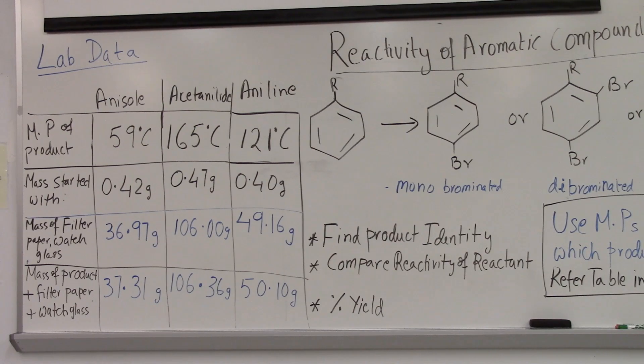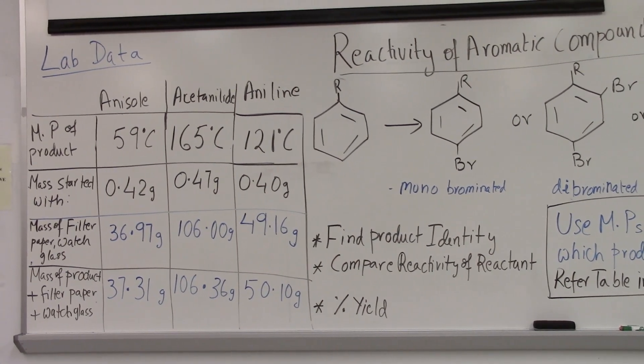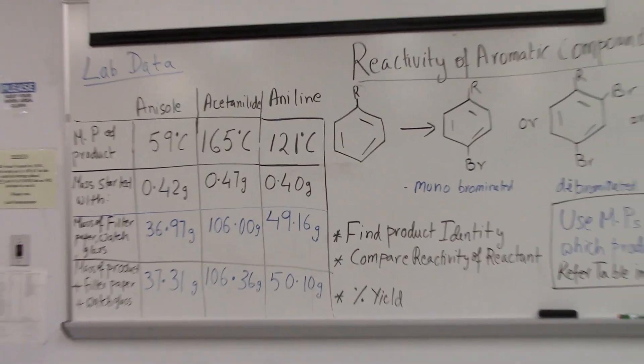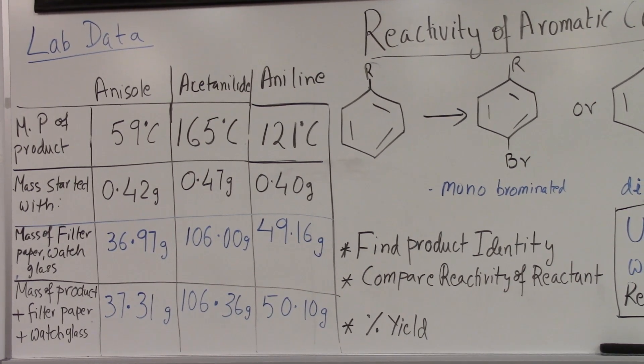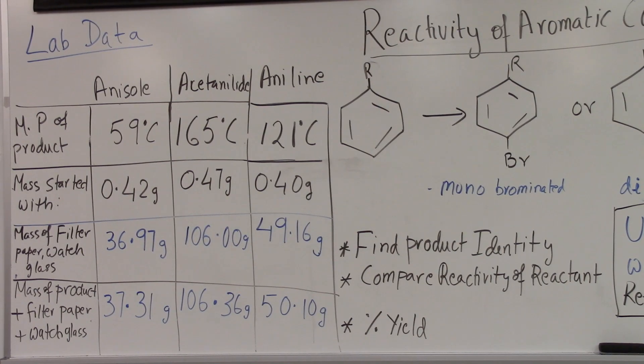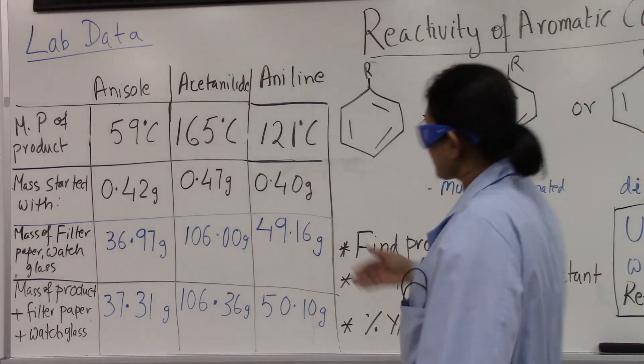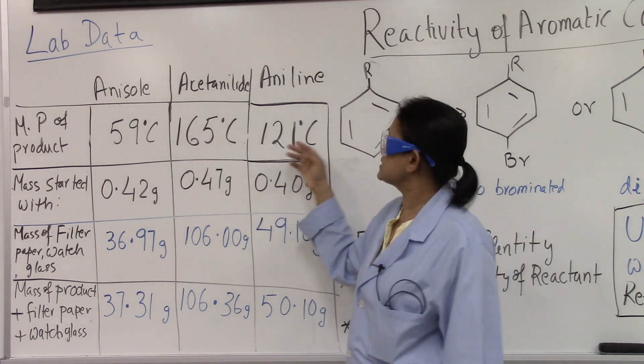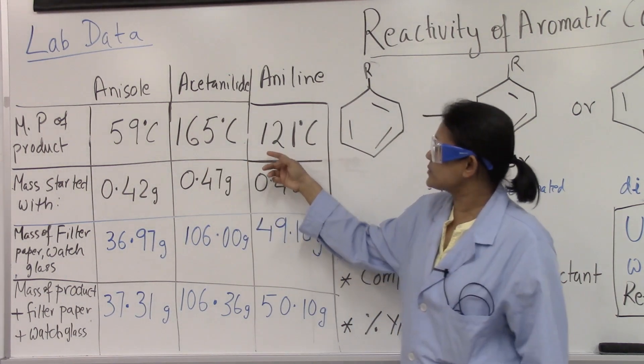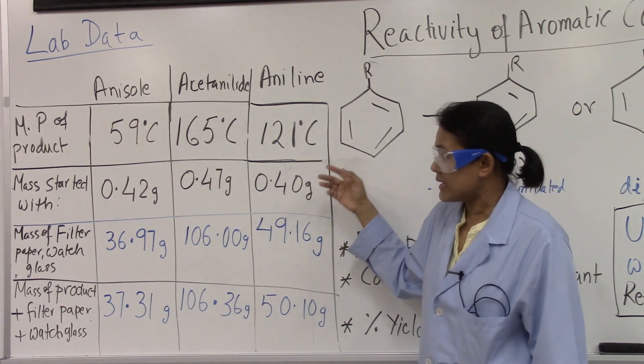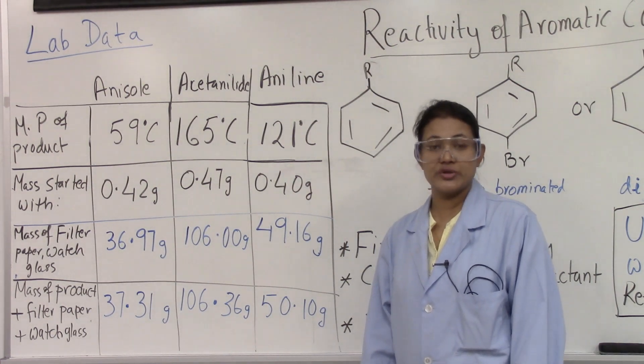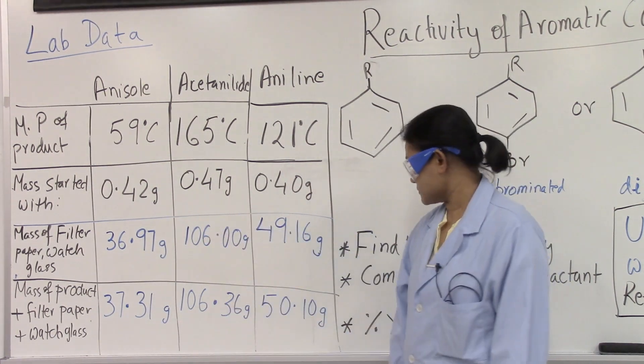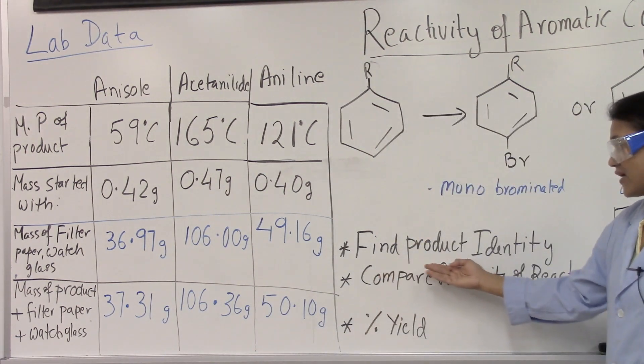So here's the table for the lab data. We have a table because there's a couple data that needs to be recorded on this experiment. We have melting point of products. For the anisole product, the melting point was 59 degrees Celsius. For acetanilide product, the melting point was 165 degrees Celsius. And for aniline, the melting point was 121 degrees Celsius. Compare these melting points from the table that's in the book, which is on page 38, and identify the product. So that's one of your goals: find product identity.